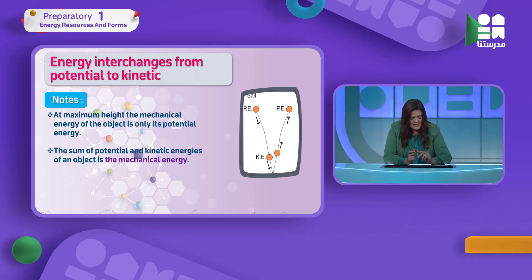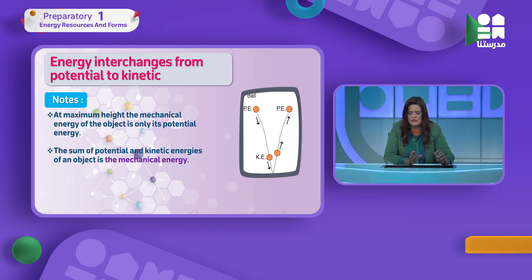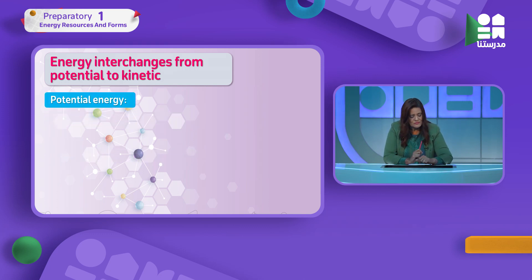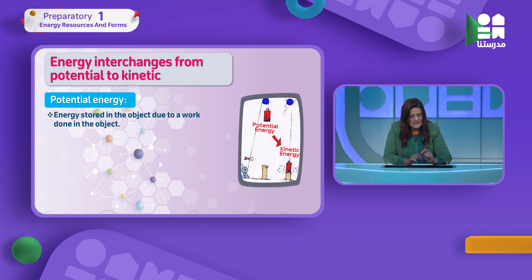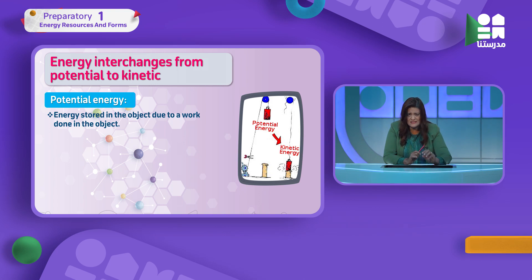When kinetic energy at the top is zero, potential energy is maximum — they are opposites of each other, and they can be converted to each other. The sum of potential energy and kinetic energy is called mechanical energy, which is equal to work done. Potential energy is the energy stored in an object due to work done on it.